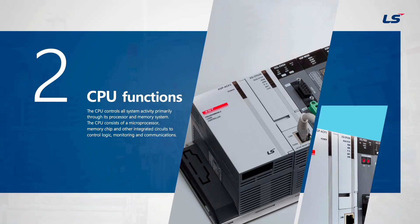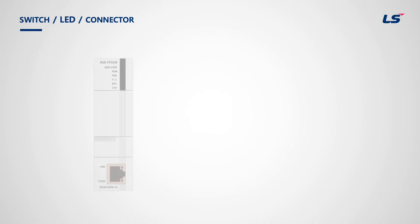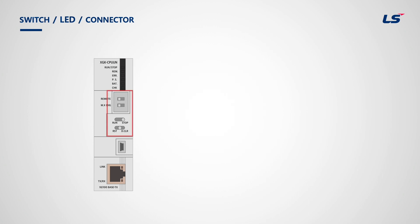Chapter 2 is about CPU functions. The network-type CPU looks like this. From the top, there are LEDs indicating CPU status, DIP switches, key switches, a USB connector, and an RJ45 connector.